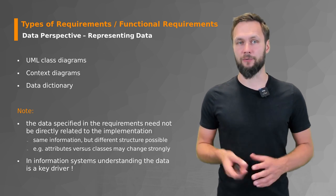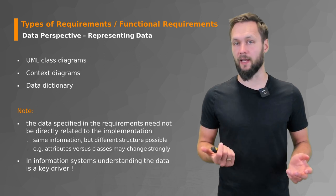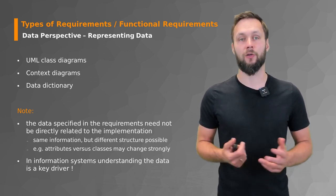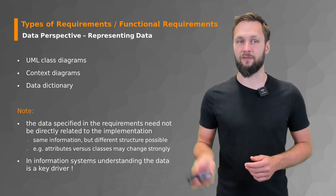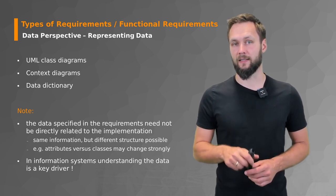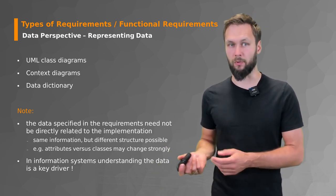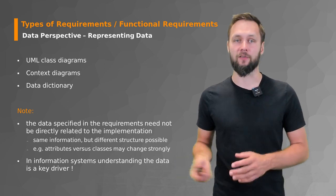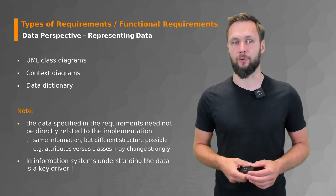There are different ways to represent this information. You could use UML class diagrams from your CS 101 courses, context diagrams, and data dictionaries. It's important to note that the data specified in requirements need not be directly related to the implementation — the same information but with different data structures is possible. For example, attributes versus classes may change strongly. Here we are strictly talking about the elicitation of requirements.